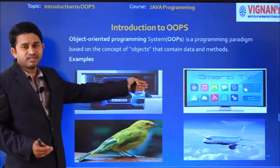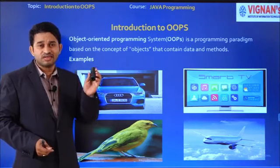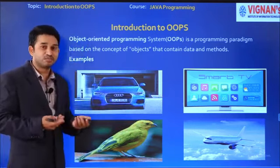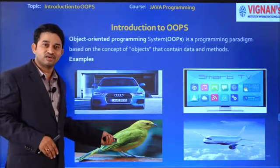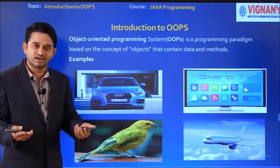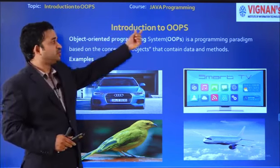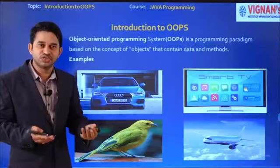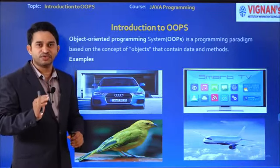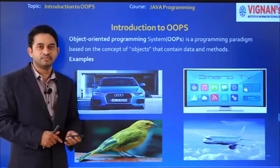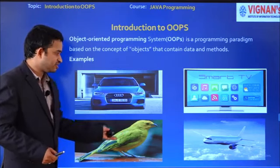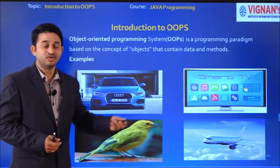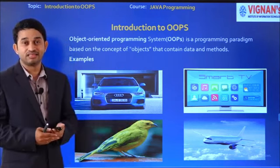Same for TV — what operations do we perform? Changing channels, using buttons — each button has a property and operations. And for a bird: eating, sleeping, flying are its operations. Everything existing in the real world comes under an object. For an aeroplane: type of plane, color, and model are properties; increasing speed and flying are operations. This is the introduction to the concept of an object.